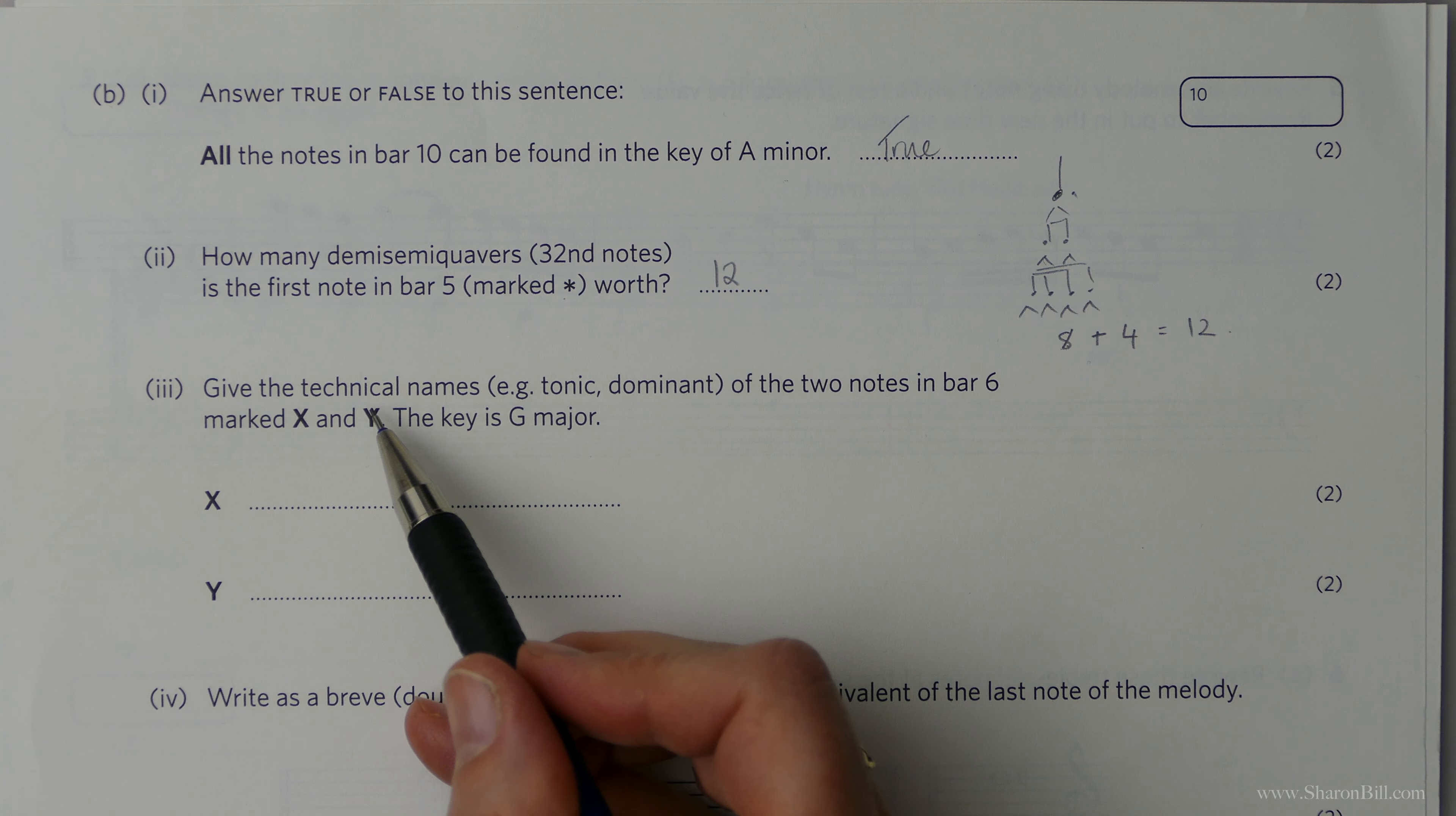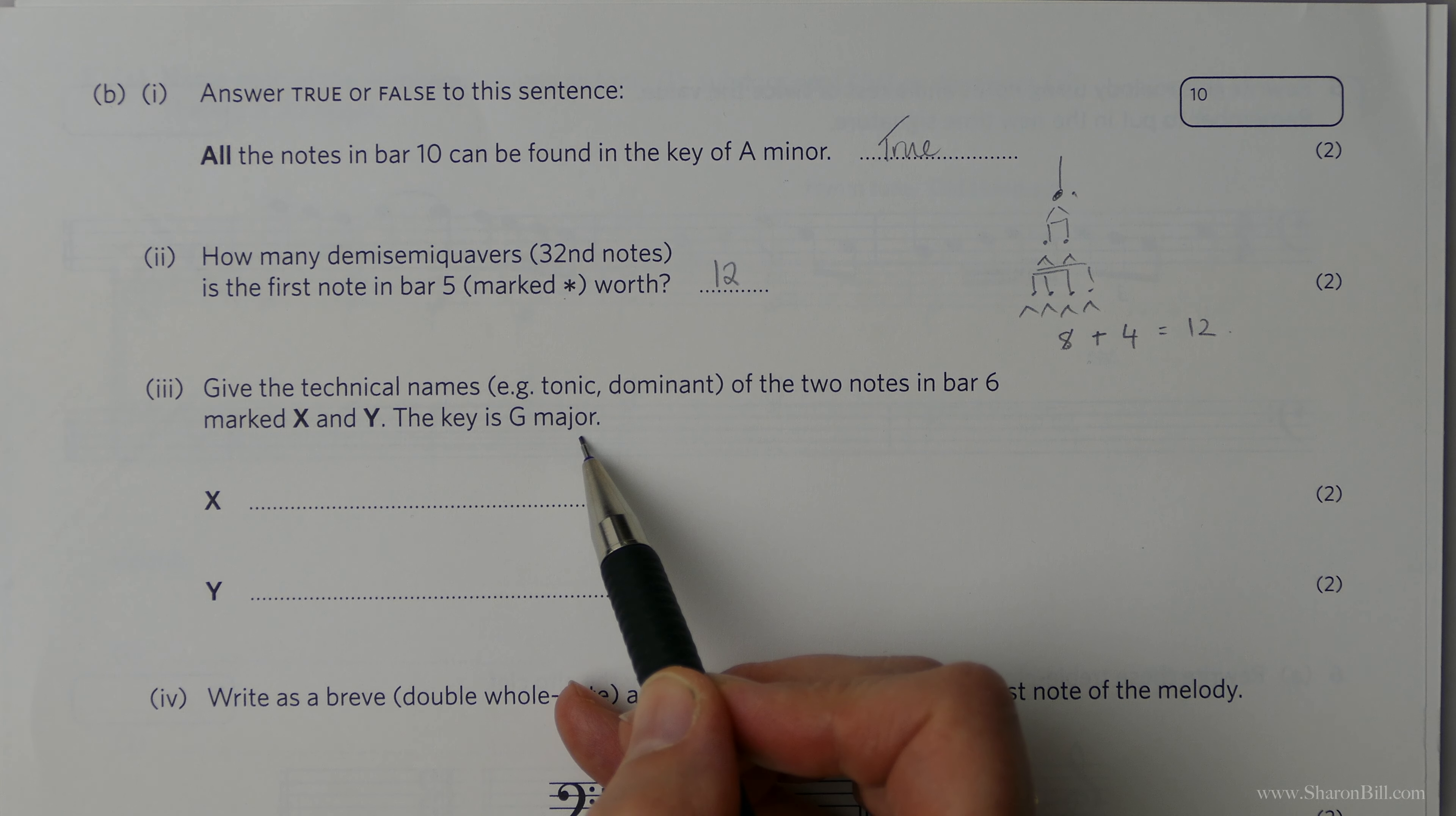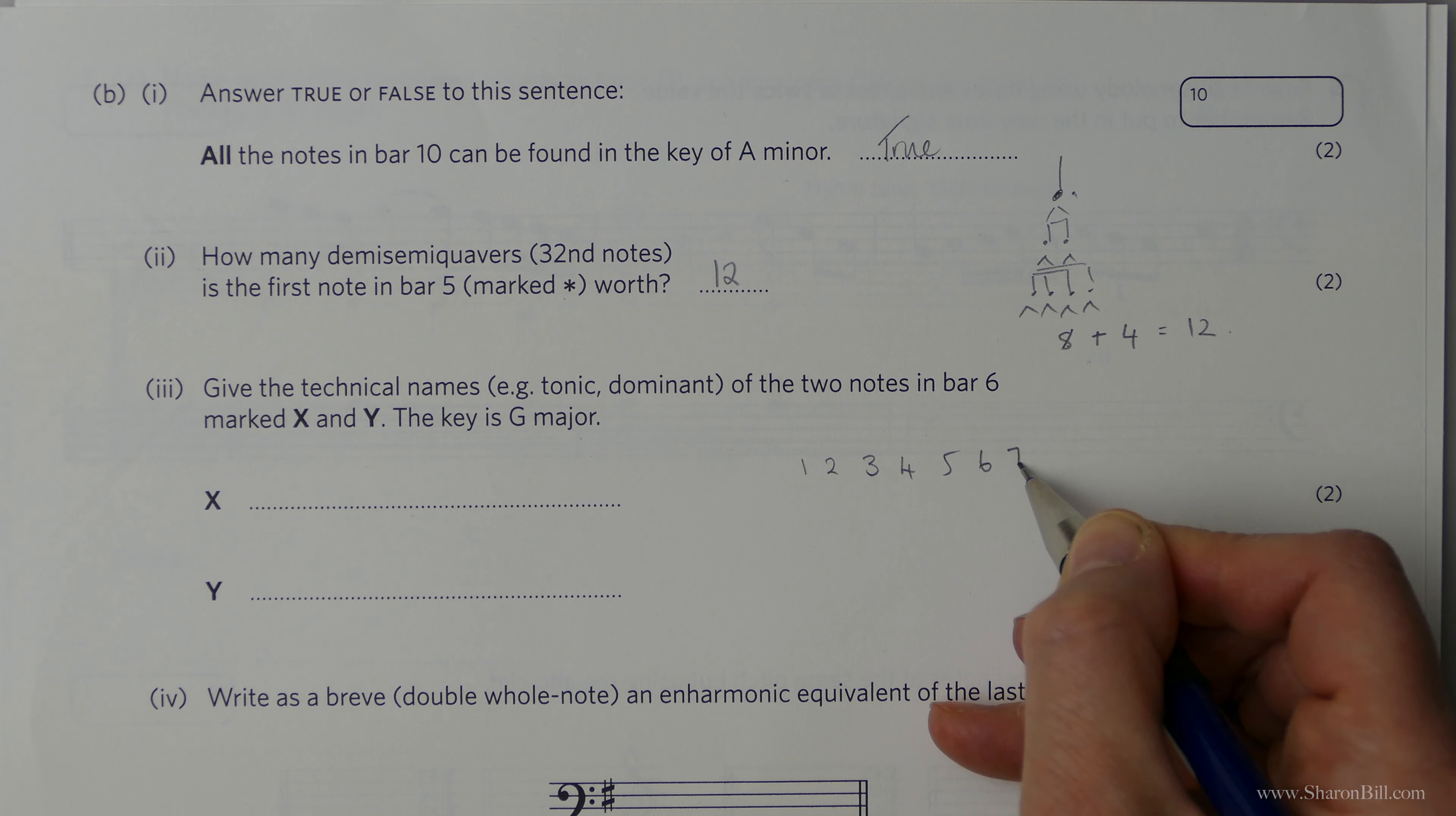Now then we're asked to give the technical names of the two notes in bar six marked X and Y. Before we go looking though, let's just see what we're going to be looking for. We're in G major. So let's write out the degrees of the scale. One, two, three, four, five, six, seven, eight. There's an octave.